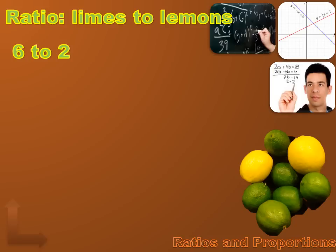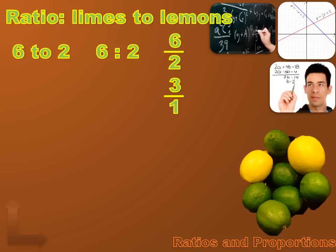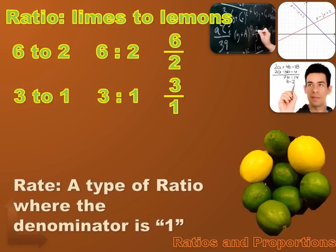I can write a ratio a couple of different ways: six to two, six colon two, or as a fraction — six over two. I can simplify that fraction to three over one, and I can simplify any ratio the same way I'd simplify a fraction. So six to two simplifies to three to one.